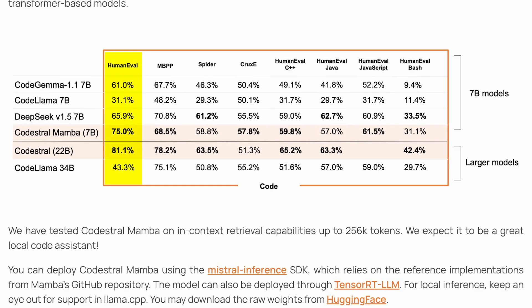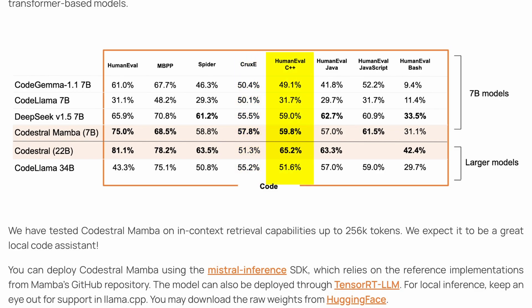In the HumanEval benchmark, it beats DeepSeek V1 and others in its range, which is quite good. In the MBPP benchmark, it falls behind a little to DeepSeek V1. In the Cruxeval benchmark, it even beats its bigger sister, which is also quite cool. In the next HumanEval subject benchmarks, it also beats others in C and JavaScript, but can't beat DeepSeek in Java and Bash.